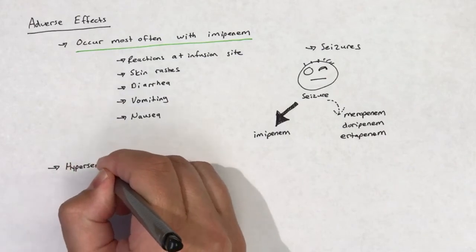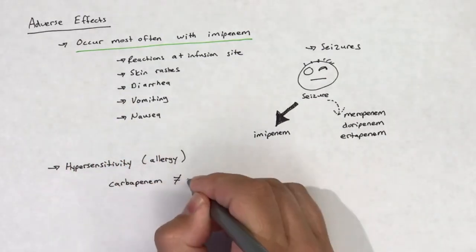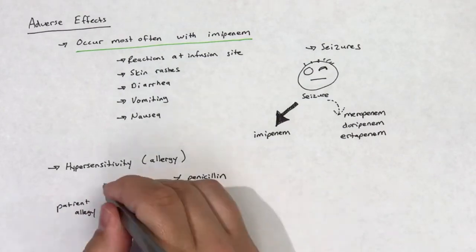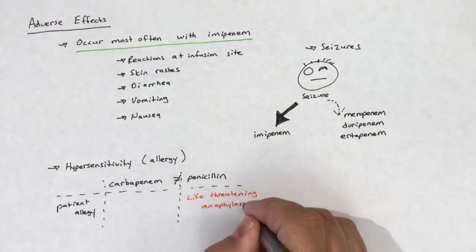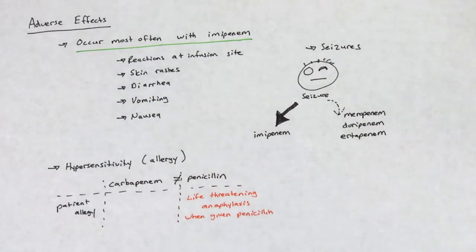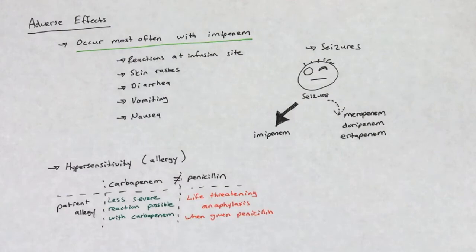Hypersensitivity to carbapenems has been reported. However, the cross-reactivity with a penicillin allergy is minuscule. Patients with a penicillin allergy may have cross-reactivity with a carbapenem, but a patient's immediate life-threatening anaphylactic response to penicillin tends to not manifest when the same patient is given a carbapenem.